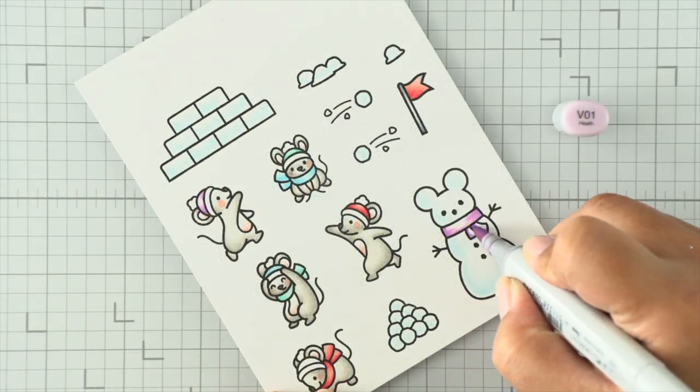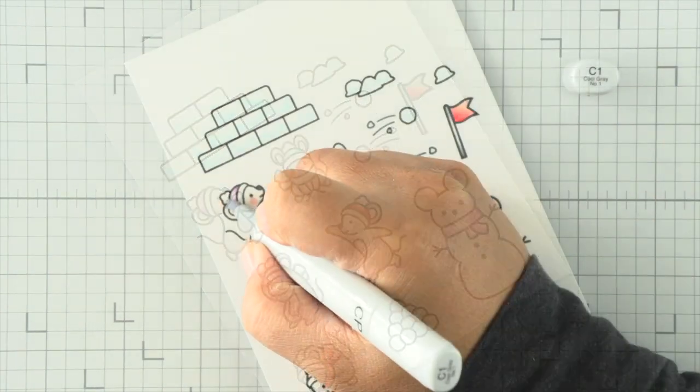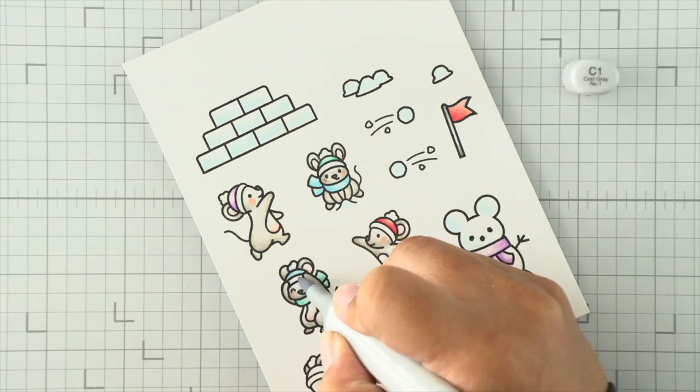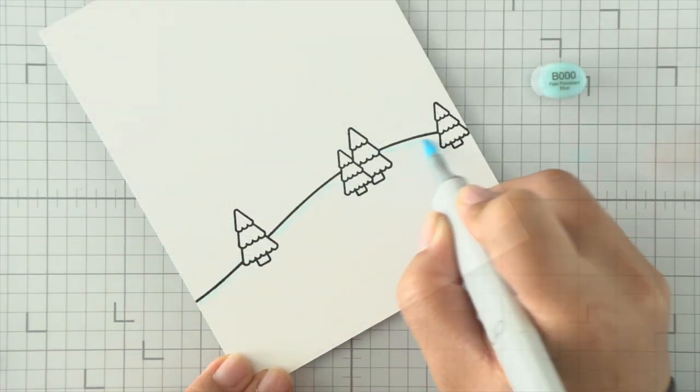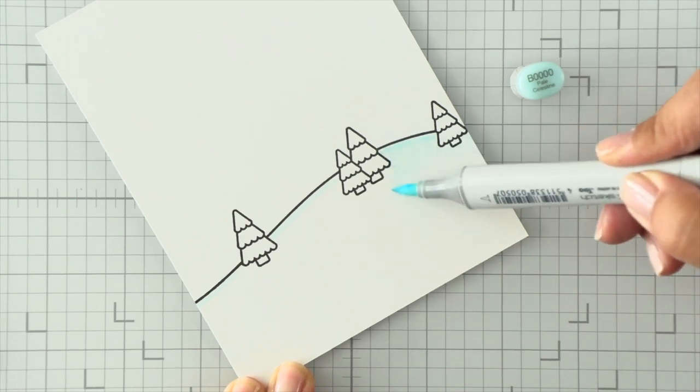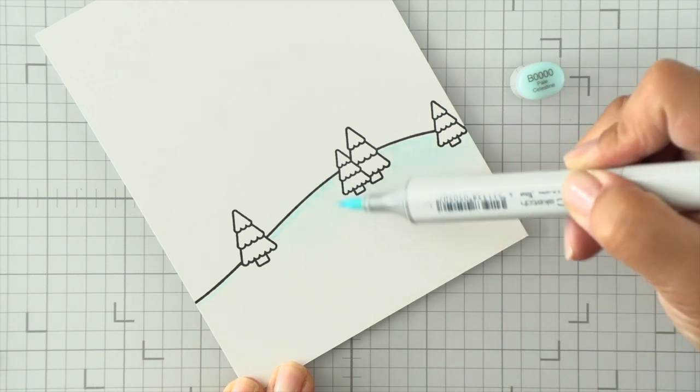The coloring is very straightforward with these smaller areas—two to three markers max. On the little hats and pom-poms I did a light gray. You don't want to ever leave white white, so I always add a little bit of gray to apply a little bit of color and shading.